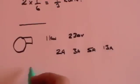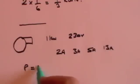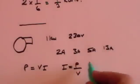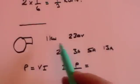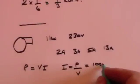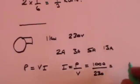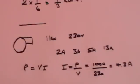So for our hairdryer power is voltage times current which means that current is power divided by voltage which is 1 kilowatt which is 1000 watts divided by 230 volts and that comes to 4.3 amps.